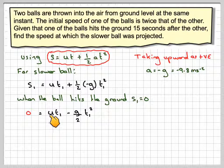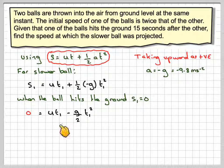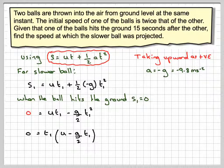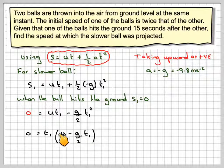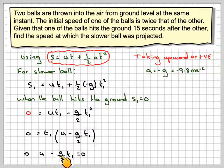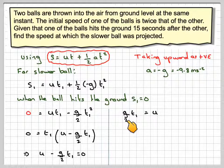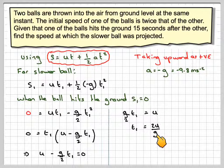So zero will be equal to ut1 minus g over 2 t1 squared. There's a common factor here of t1, so we'll take that out, and then we're left with u minus g over 2 t1. For this to be the initial time when t is equal to zero, so we won't worry about that one. This gives us where the ball hits the ground again. So we're going to have u minus g over 2 t1 is equal to zero. g over 2 t1 will be equal to u, therefore t1 will be 2u over g.